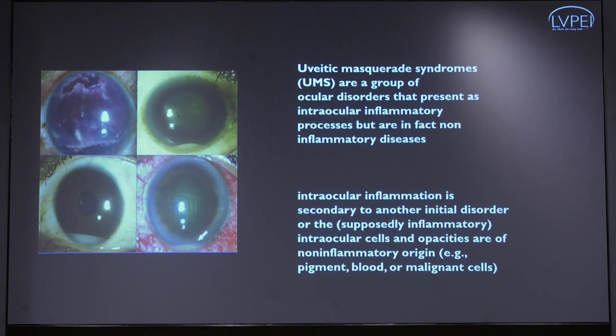Intraocular cells and opacities are essentially non-inflammatory in origin, which may be due to pigments, blood, or malignant cells. We need to keep this in mind in atypical presentations or in cases which are recalcitrant and not responding to initial treatment.